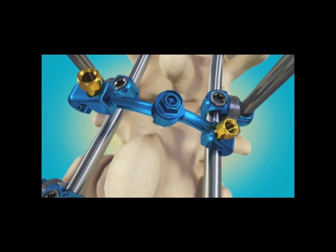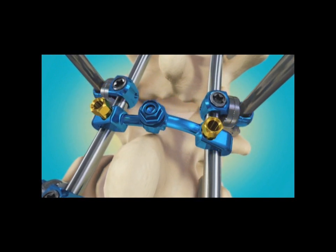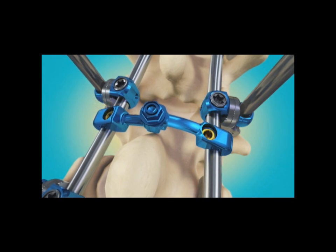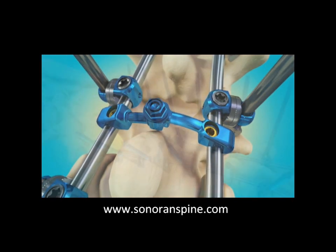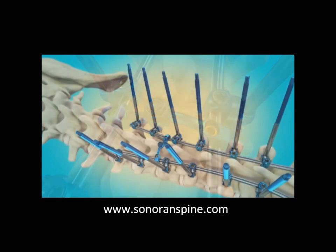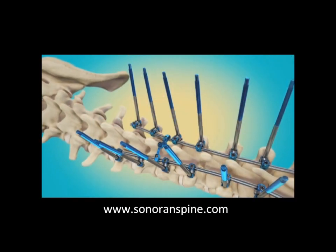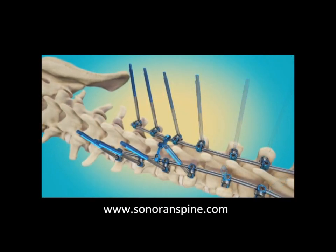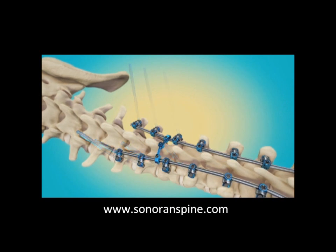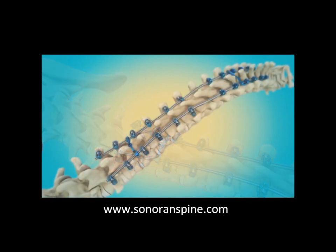This is showing a cross linkage that joins each rod together, which effectively spreads the stress and the strength of the construct among both rods. So all screws are stressed, meaning no screw is stressed too much. And that makes the construct much stronger.